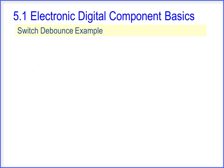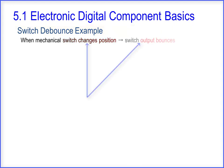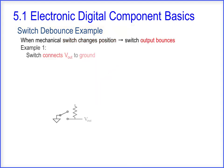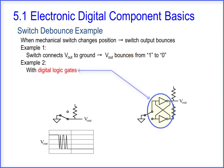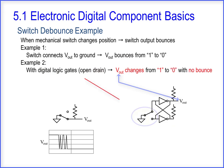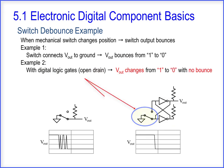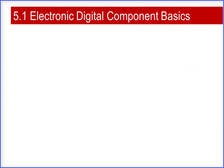We'll conclude this section with a logic gate switch debounce example. When a mechanical switch changes position, the switch output bounces. In Example 1, the switch connects Vout to ground and Vout bounces from 1 to 0. In Example 2, using digital logic gates with an open drain configuration, Vout changes from 1 to 0 with no bounce. This concludes Section 5.1 Electronic Digital Component Basics.